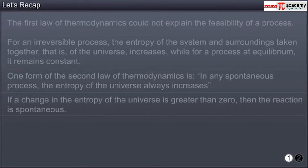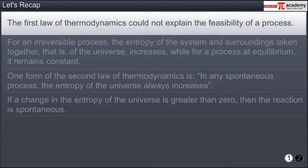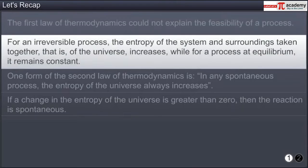You have now reached the end of this module. In this module you learned that the first law of thermodynamics could not explain the feasibility of a process. For an irreversible process, the entropy of the system and surroundings taken together — that is, of the universe — increases, while for a process at equilibrium it remains constant.